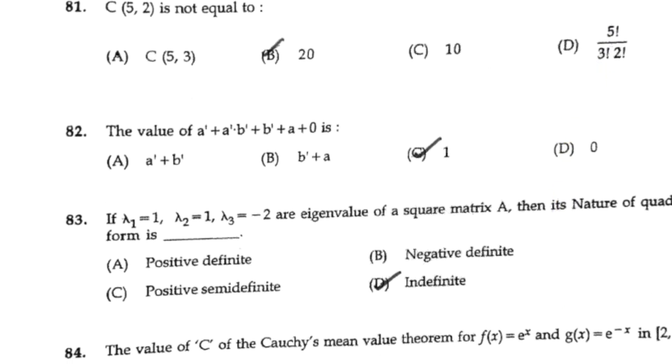The value of (A' + A')(B' + B') + (A + 0) is 1.